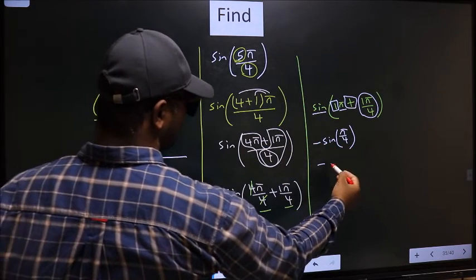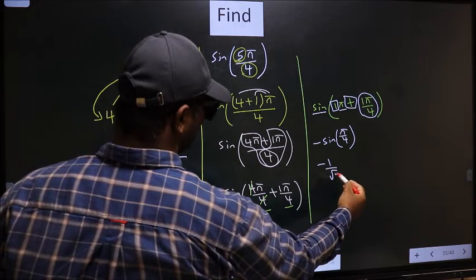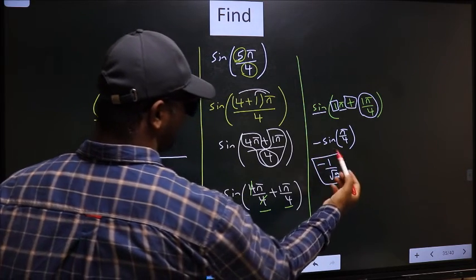So negative sin pi by 4 is 1 by root 2. So this is our answer.